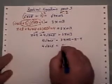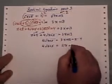3x minus 1x is 2x. 13 minus 9 is plus 4.